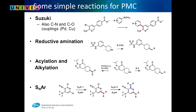There are many simple reactions you can do in parallel chemistry — Suzuki reactions, reductive amination where you take an aldehyde and put an alkyl group on nitrogen, amide formation off acids or acid chlorides, alkylation with alkyl halides, and SNAr reactions. These are very simple reactions you can do over and over again. But not all targets are as simple — not all chemicals look like this.